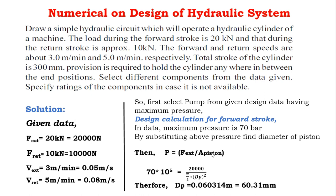There are two forces acting on the system, and we try to find the piston diameter based on the maximum force. The maximum force is 20 kN, which acts at the time of extension.